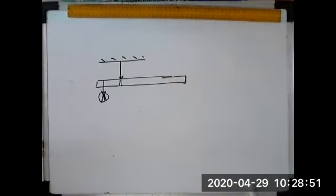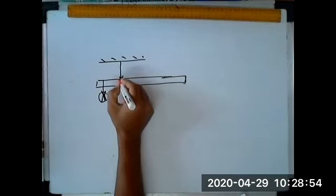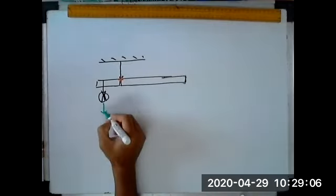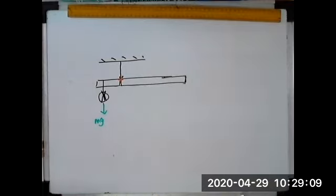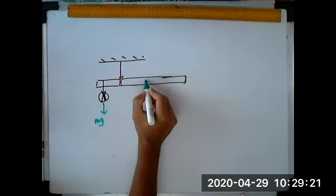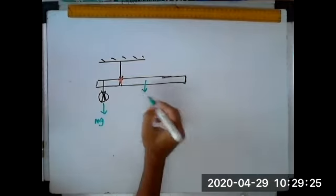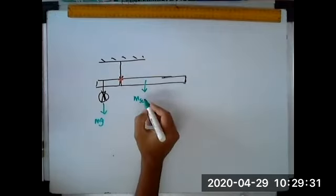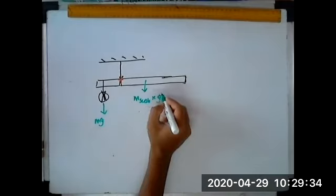The axis of rotation is here — this is where it will rotate through. Now how do we understand this? There is a force on this side; we can see the force in G, but we can't see the force on the other side. There is a suggestion from some people that there is a force acting on this side, and that force is actually the weight of the scale — the mass of the scale times the gravitational constant.